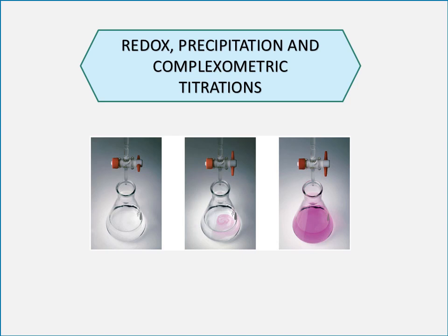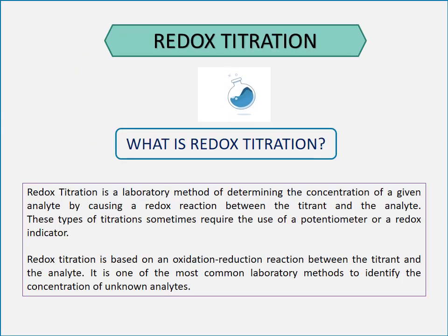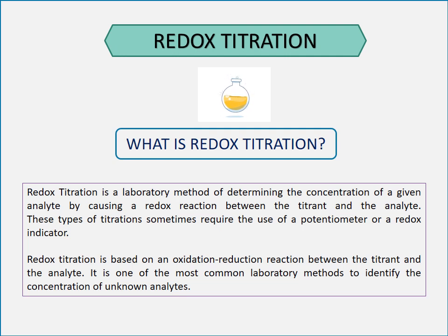We are going to talk about redox precipitation and complexometric titration. Redox titration is a laboratory method of determining the concentration of a given analyte by causing a redox reaction between the titrant and the analyte. These types of titrations sometimes require the use of potentiometric or a redox indicator. It is one of the most common laboratory methods to identify the concentration of unknown analytes.